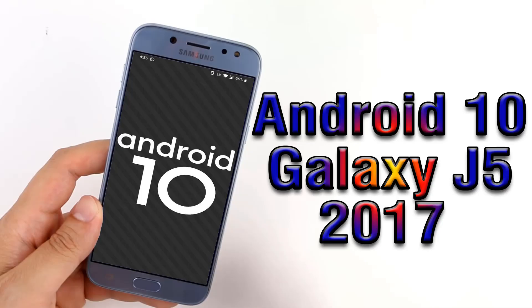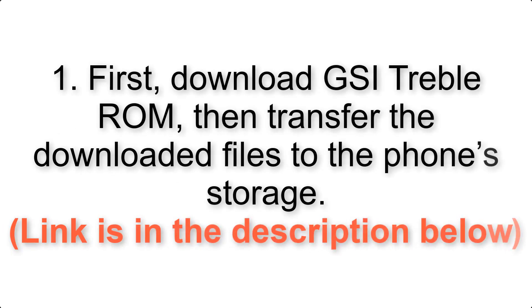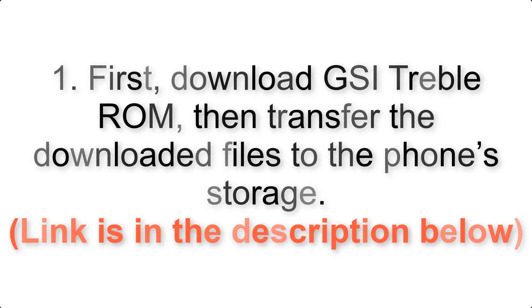Install Android 10 on Galaxy J5 2017 via AOSP GSI treble ROM. Please check the description for important notes and all the download links. First, download the ROM and gapps packages, then transfer the downloaded files to the phone storage. The link is in the description below.